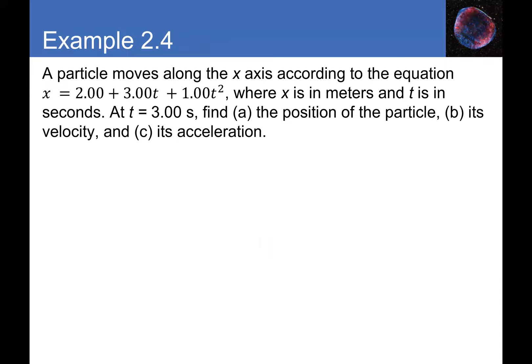Example: A particle moves along the x-axis with position x = 2 + 3t + t², where x is in meters and t is in seconds. At t = 3 seconds, we need to find the position, velocity, and acceleration of the particle. We substitute t = 3 into the position equation, then take derivatives to find velocity and acceleration functions.